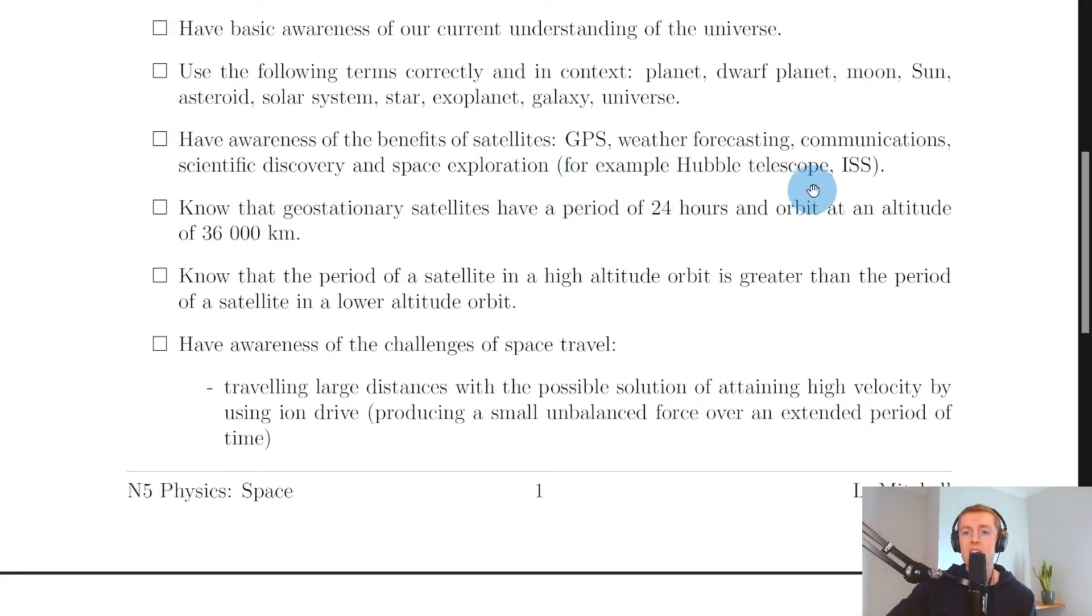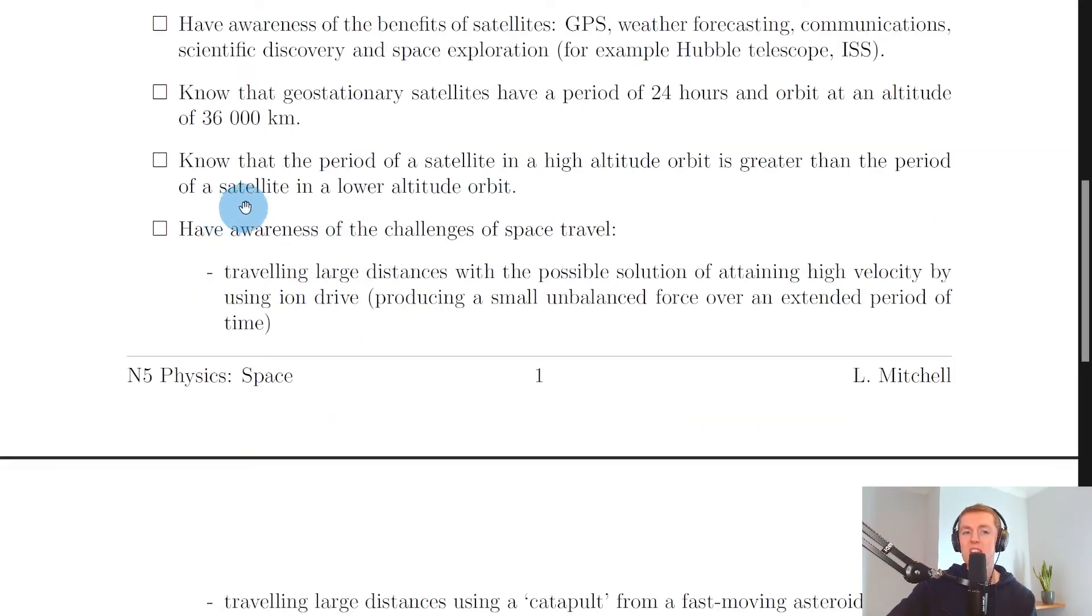Next, you need to have awareness of the benefits of satellites such as GPS, weather forecasting, communications, scientific discovery, and space exploration—for example, the Hubble Telescope or the ISS—and it's worth being able to describe some of these uses. You also need to know that geostationary satellites have a period of 24 hours and orbit at an altitude of 36,000 kilometers. So you need to know these two key numbers.